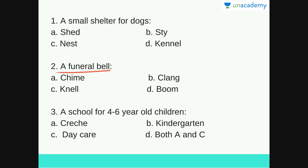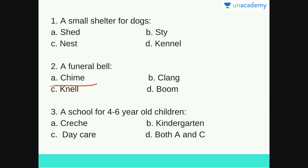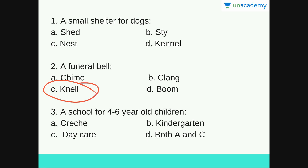Next: a funeral bell. Options are chime, clang, knell or boom. The answer is C — Knell — a funeral bell, or a bell which is rung slowly to announce a death. Chime refers to wind chimes — tubular structures hung at houses or offices that make a pleasant sound when the wind blows. Clang is a loud sound, and boom is also a loud sound — as in comic strips when there is an explosion. So the answer is C, knell — a funeral bell.